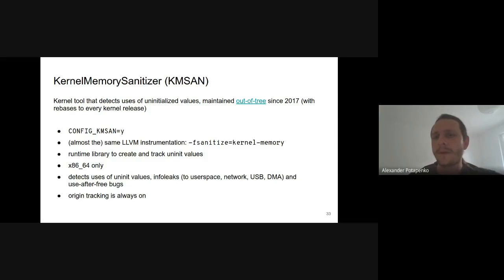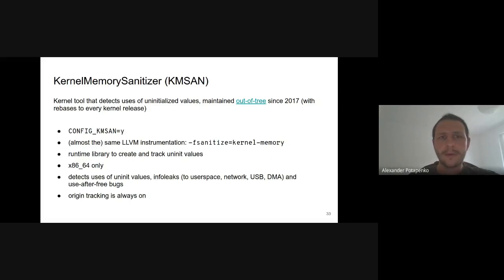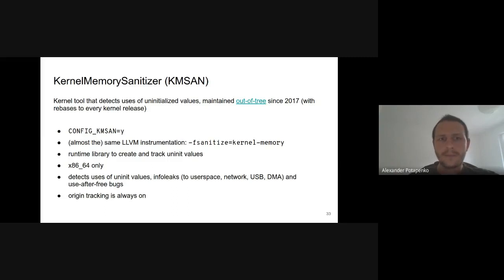Now let's move to the kernel. Four years ago I presented Kernel Memory Sanitizer, currently maintained as an out-of-tree kernel fork which I try to rebase to every kernel release. It uses almost the same LLVM instrumentation, but the runtime library was completely rewritten. This tool supports only x86-64 at the moment. It can detect uses of uninitialized values, information leaks, and use-after-free bugs. Origin tracking is always on.